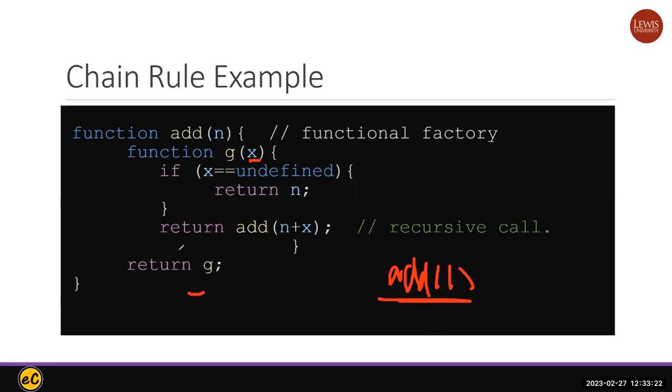You generate a G function and G function will add. X is not defined, undefined. So you will return n, you will return 1. If you do this parenthesis and then no data, this one will return a value, that's 1.